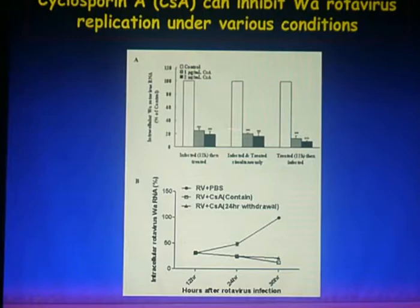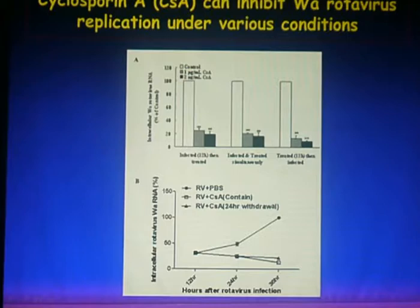In order to determine whether cyclosporin A-mediated suppression of rotavirus replication in HT29 cells could be maintained after initial treatment, we eliminated cyclosporin A from the rotavirus-affected culture. This withdrawal did not lead to a rebound in rotavirus replication compared to continual drug treatment.